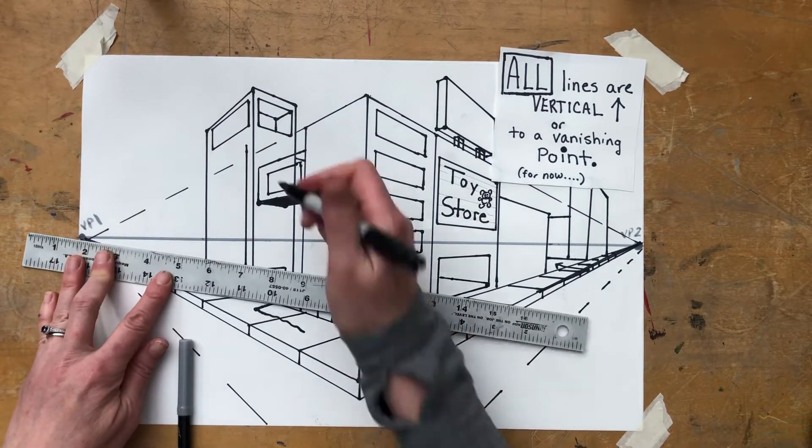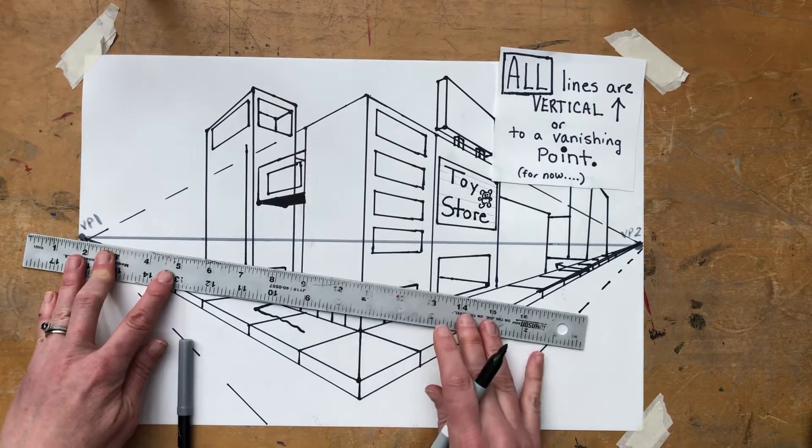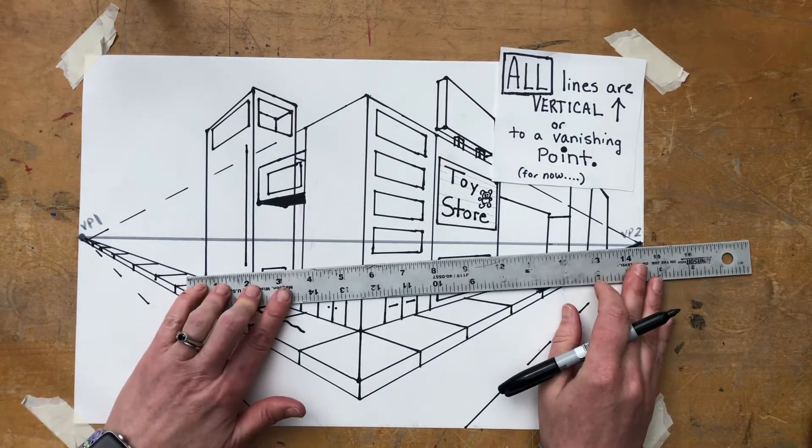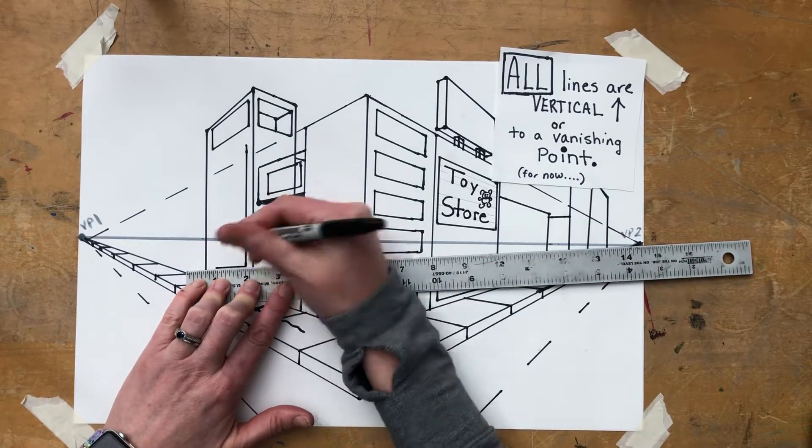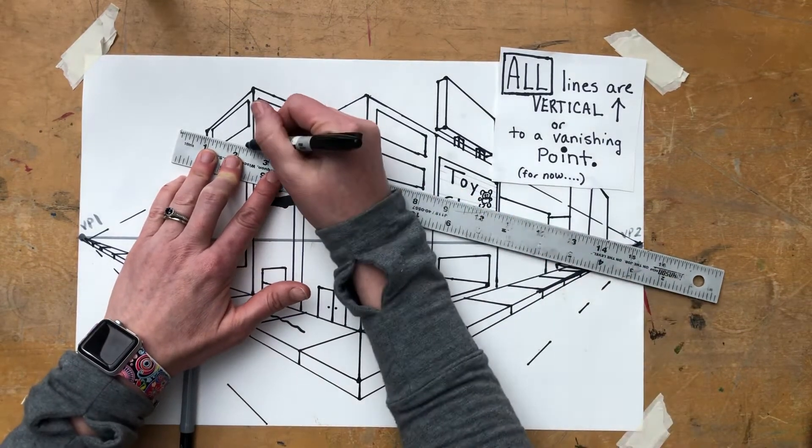But because I want it to stick off of the building, I'm going to line it up to VP2. And when I line it up to the opposite vanishing point, look at what it does. It kind of goes up in the air like this and up to the vanishing point down here.